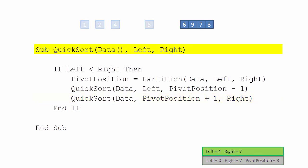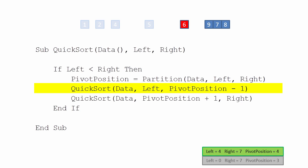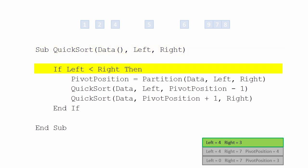A brand new second invocation begins and is pushed onto the stack. Left is less than right, so the partition function is called. New sublists are generated, and a new invocation is called upon to process the left-side sublist — but there is no new sublist here. Left is bigger than right, so this invocation is popped off the stack.